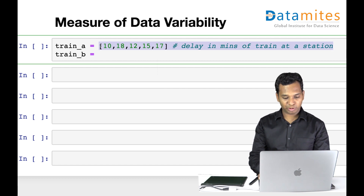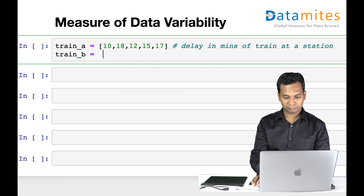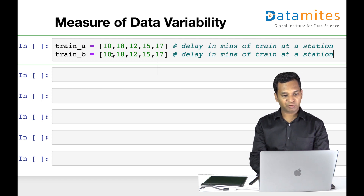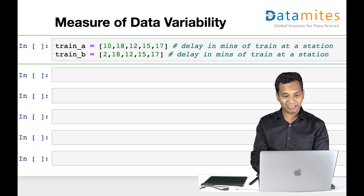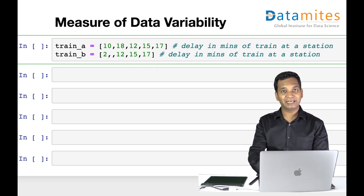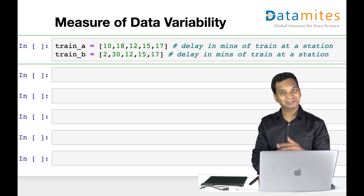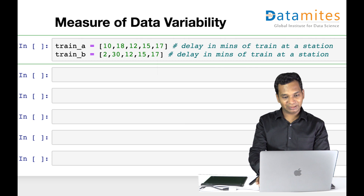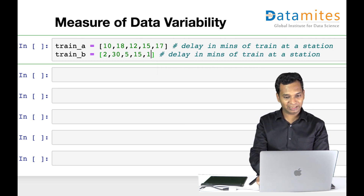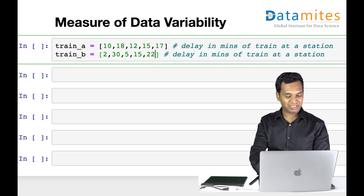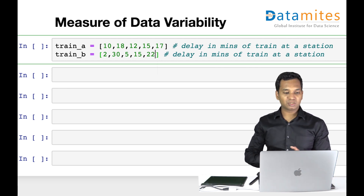Similarly, Train B has delays of 2, 30, 5, 15, and 22 minutes on different days. So Train A has its delays and Train B has its delays.